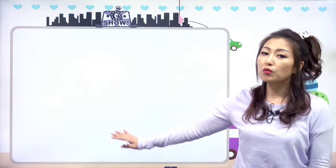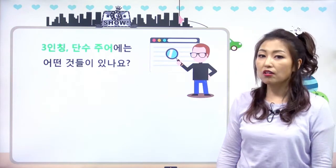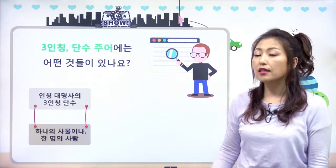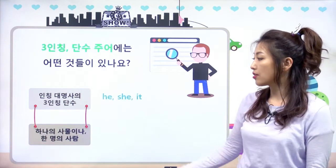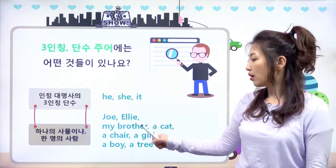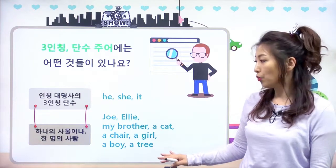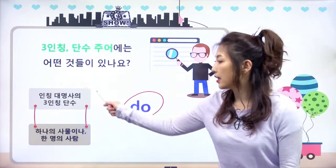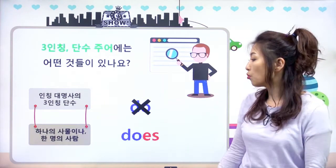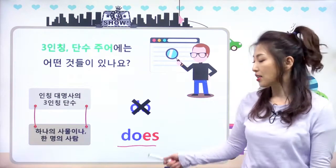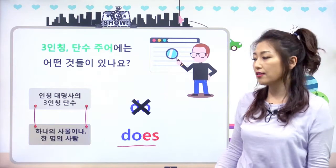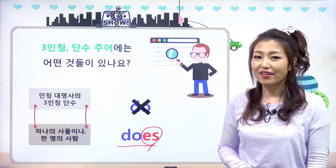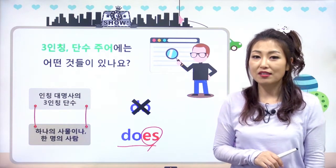do의 도움을 받아서, 3인칭 단수 주어 기억하죠? he, she, it, 그리고 Joely, my brother, a cat, a chair 같은 하나의 사물이나 한 명의 사람이 3인칭 단수 주어예요. 일반적으로 do를 빌려 쓰는데, 3인칭 단수 주어이기 때문에 does를 쓰고, do는 안 써요. 이제 왜 do·does가 동시에 항상 문법책에 등장하는지 잘 이해했죠?